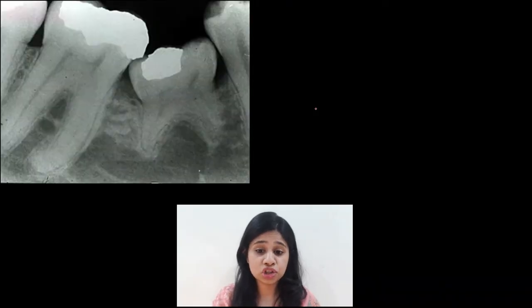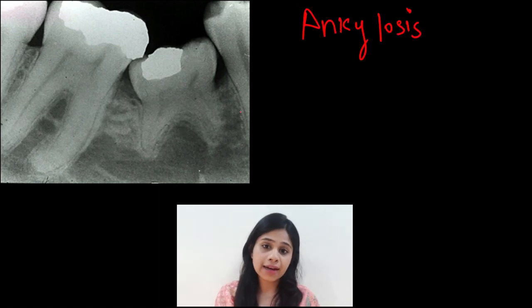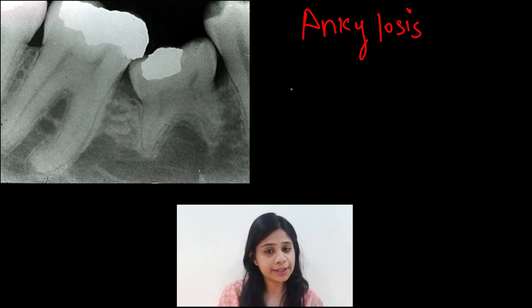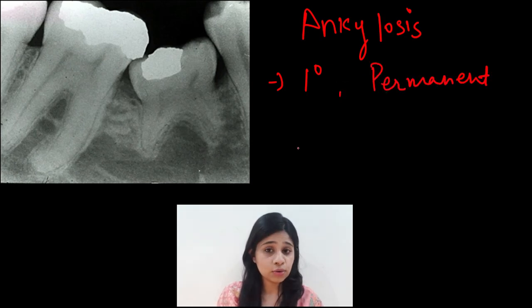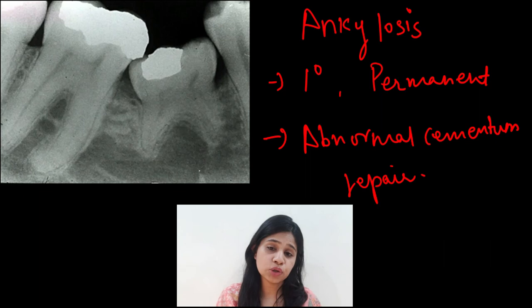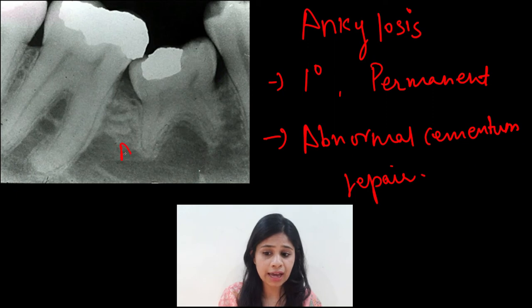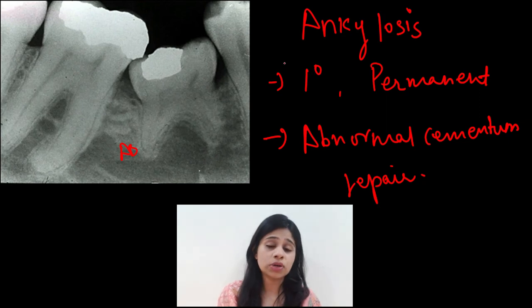Ankylosis is the fusion of cementum to the alveolar bone, with obliteration of the periodontal ligament space. It mainly occurs in the primary dentition but can also occur in permanent dentition. Ankylosis represents a form of abnormal cementum repair where reparative cementum obliterates the periodontal ligament space itself and fuses directly to the alveolar bone, leaving no periodontal ligament in ankylosed teeth.